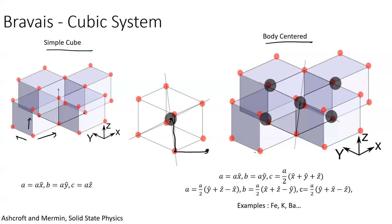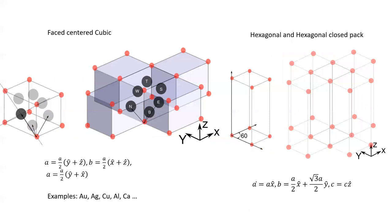The most common is a face-centered cubic (FCC). We take a cubic lattice and add a lattice point to each face — north, west, south, east, top, and bottom — in addition to the simple cube lattice points. The unit vectors can be defined accordingly. Many metals like gold, silver, and copper all crystallize in this structure. We also have a hexagonal lattice where two unit vectors are at 60 degrees to each other and the third vector is perpendicular to both, giving a hexagonal closed-pack system.